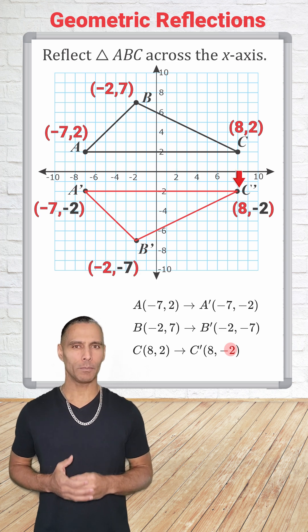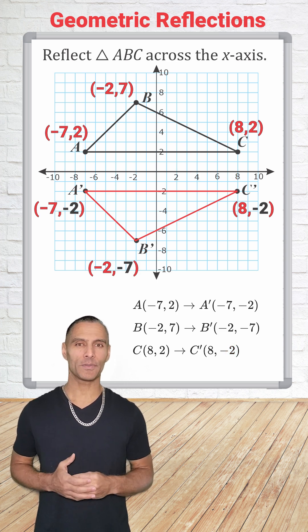In a reflection, each point moves the same distance from the axis, just in the opposite direction.